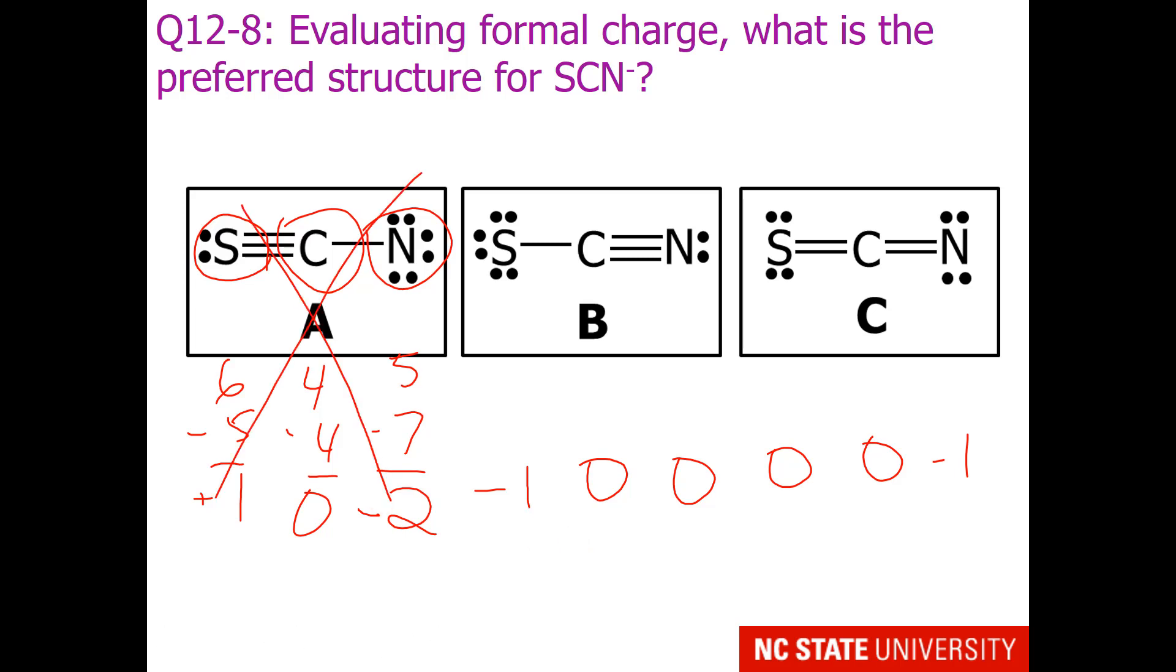So what it comes down to is, should the minus 1 formal charge be on sulfur or on nitrogen to make our more stable representation? To answer this, think about which one of these atoms is more electronegative and therefore can support a minus 1 formal charge more comfortably.